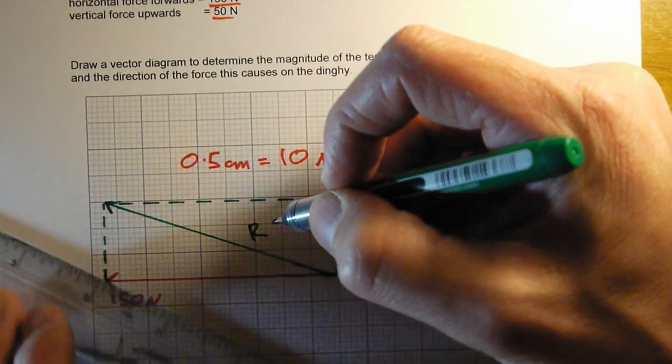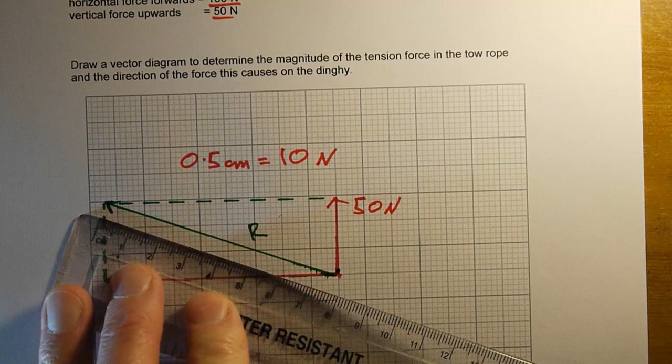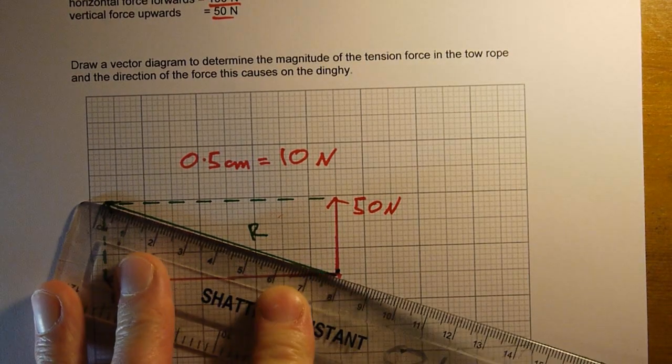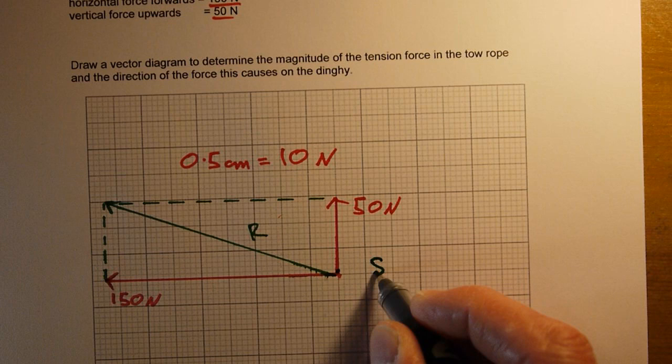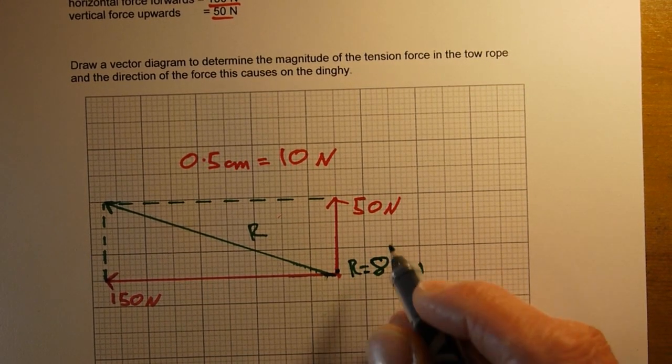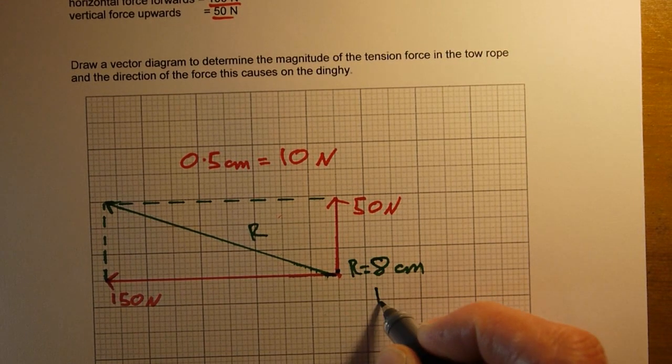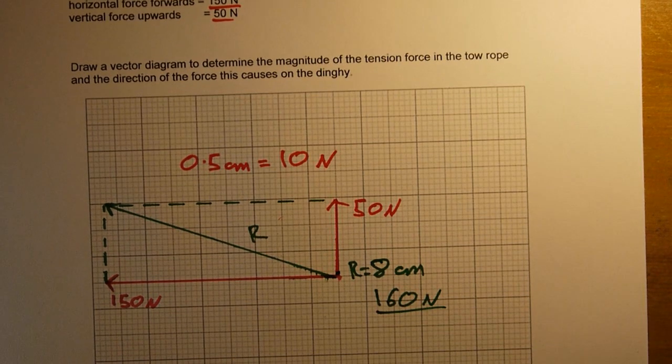That's our resultant force R. I can just use my ruler to measure the length of that, and that is at 8 centimeters. According to my scale, 8 centimeters would give us a resultant force of 160 newtons. So that's the magnitude of the force.